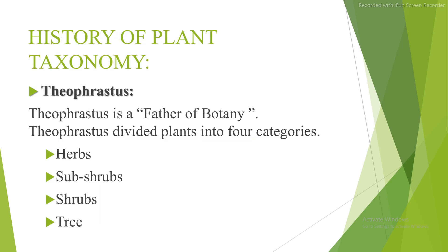Regarding the history of plant taxonomy, Theophrastus is the father of botany. He divided plants into four categories: herbs, subshrubs, shrubs, and trees. Herbs are any seed-bearing plant that does not have a woody stem and dies down to the ground after flowering. For example, the banana plant is the world's largest herb.